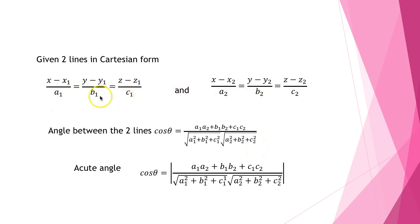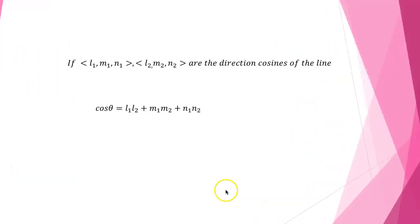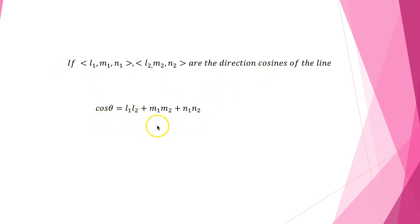We basically need to know the direction ratios of the two lines, and the acute angle is given by cos θ equal to the modulus of (a1·a2 + b1·b2 + c1·c2) divided by (√(a1² + b1² + c1²) · √(a2² + b2² + c2²)). If l1, m1, n1 and l2, m2, n2 are the direction cosines of the lines, the angle θ is given by cos θ equal to l1·l2 + m1·m2 + n1·n2.